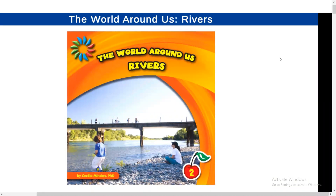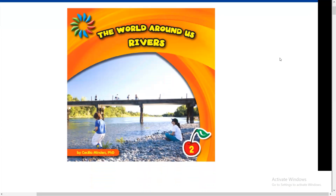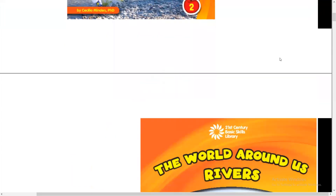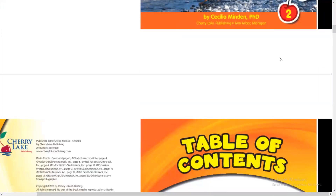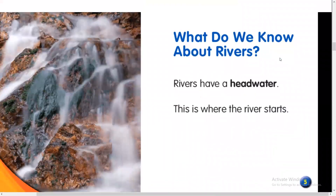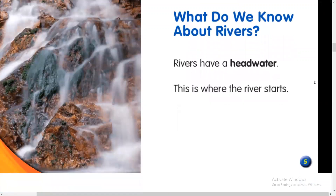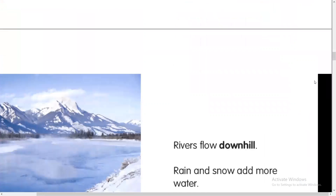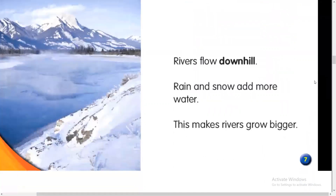The World Around Us: Rivers. Table of contents — let's begin. What do we know about rivers? Rivers have a headwater; this is where the river starts. Rivers flow downhill, and rain and snow add more water.